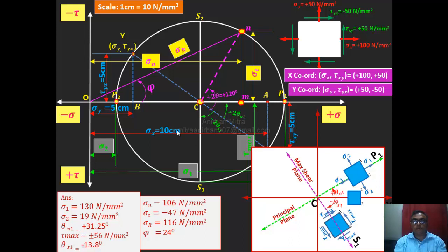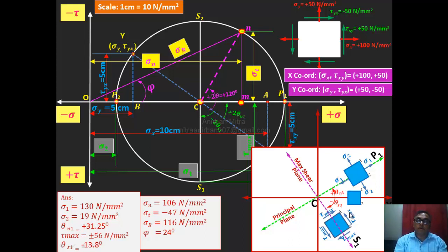I think you understand the Mohr circle properly. In the earlier portion I explained how to solve the Mohr circle, and if you convert that Mohr circle into the element diagram, how it represents the principal plane and shear plane. I just want to solve the next two questions. The most important part is to find out the X coordinate and Y coordinate according to the sign conventions.